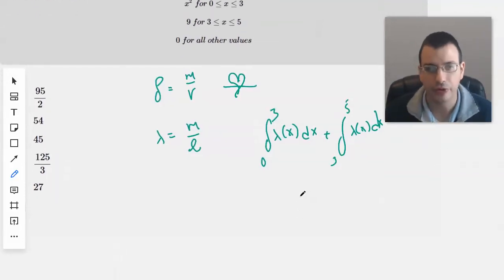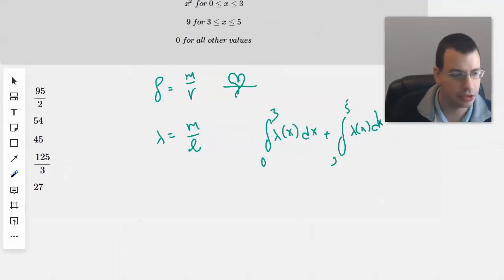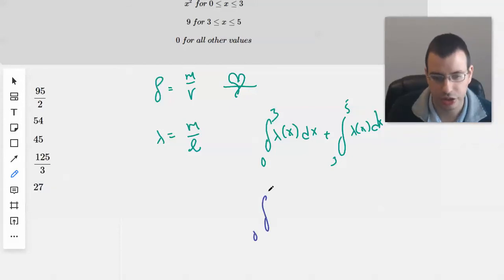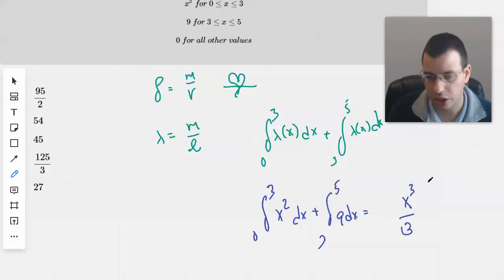Put in our values here. From 0 to 3, x² dx plus 3 to 5, 9 dx equals x³/3.